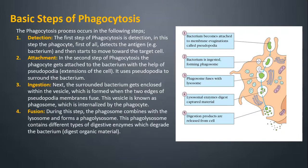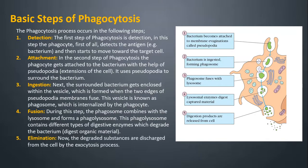Fusion — During this step, the phagosome combines with the lysosome and forms a phagolysosome. This phagolysosome contains different types of digestive enzymes which degrade the bacterium and digest organic material. Elimination — The degraded substances are discharged from the cell by the exocytosis process.